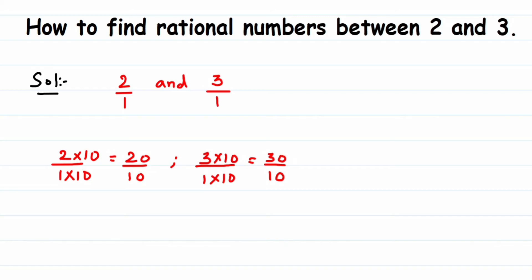If they're asking for three rational numbers, just pick any three, like 21/10, 22/10, or 25/10 — it's completely up to you. If they ask for five, pick any five. If you need more rational numbers, multiply by a larger number like 20 instead of 10. Just make sure you're getting a sufficient number of rational numbers between them.